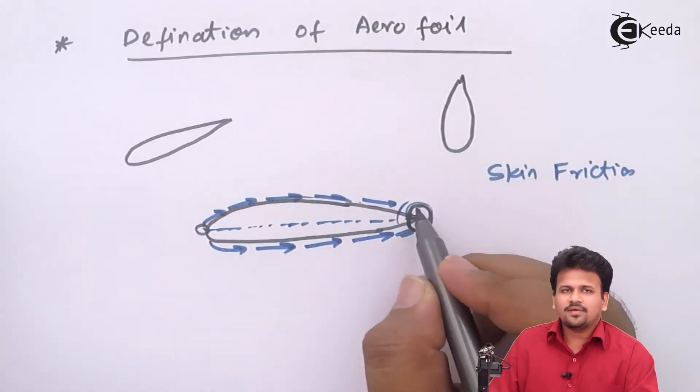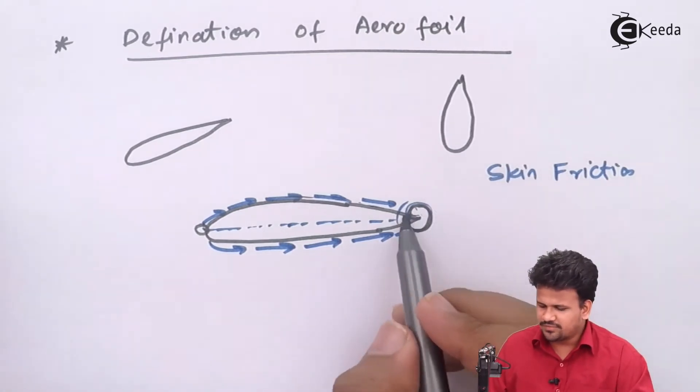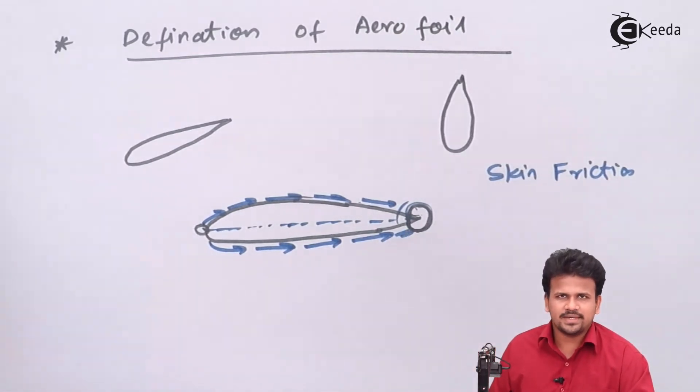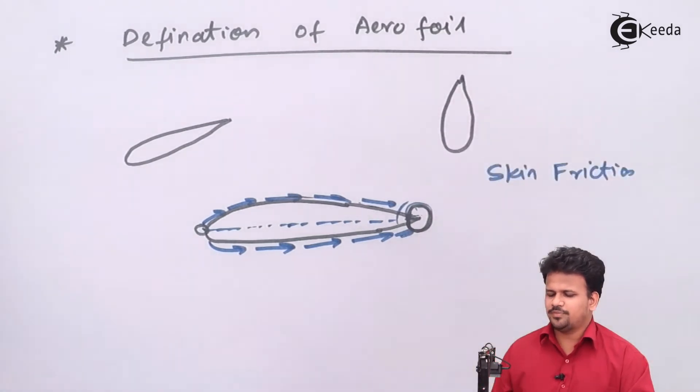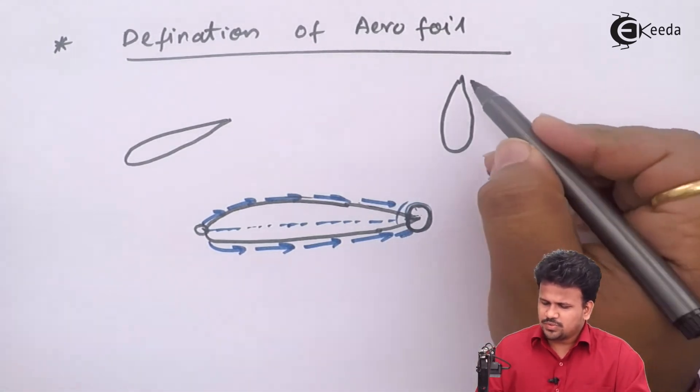And there is a very small amount of wake formation developed at the end of the body. Now a naturally occurring aerofoil is a drop.